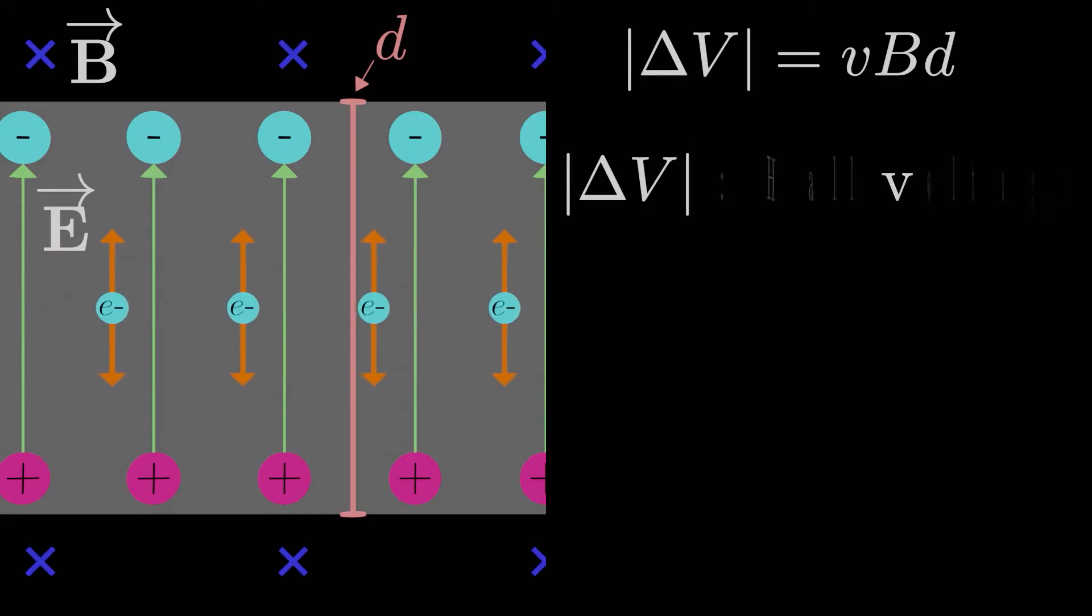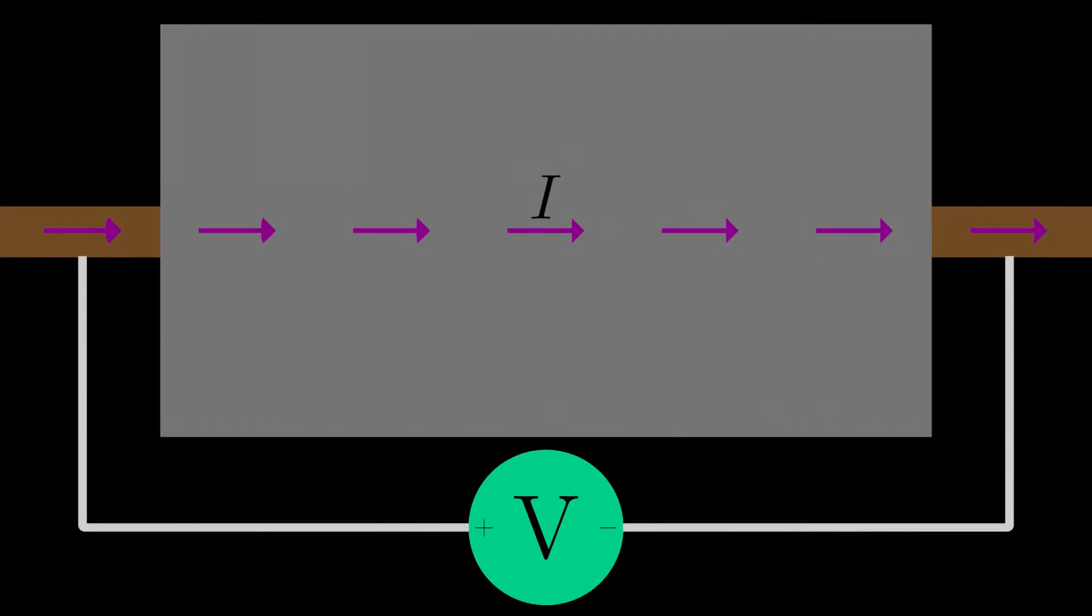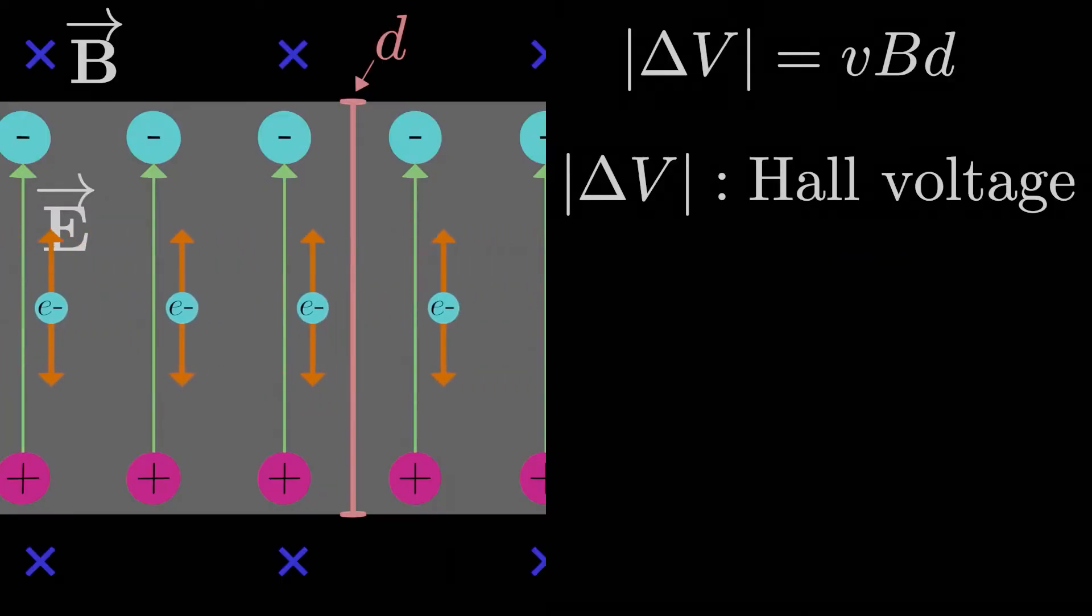This is what's known as the Hall voltage. It's a voltage or potential difference you could physically measure between the top and bottom of the slab if you connected a voltmeter across the current carrying slab. Which is pretty cool, you usually think of connecting a voltmeter between two points across the length of a current carrying conductor, not across the cross section of the current itself, which is totally bizarre. But here in the presence of a magnetic field, we would measure an actual voltage, roughly given by this equation here, VbD.